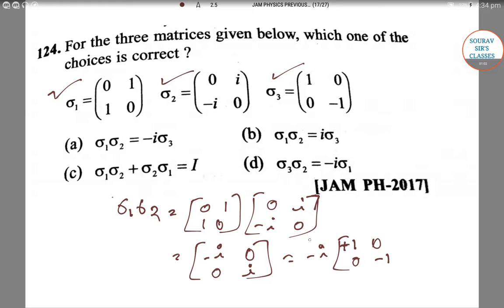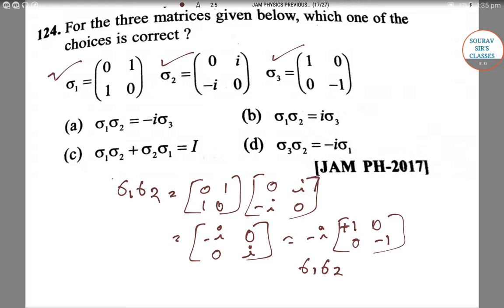As we've taken common factor minus i, Sigma one Sigma two is equal to i times Sigma three. So Sigma one Sigma two equals i into Sigma three.